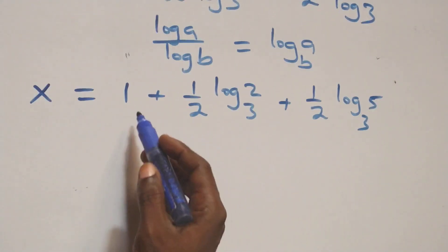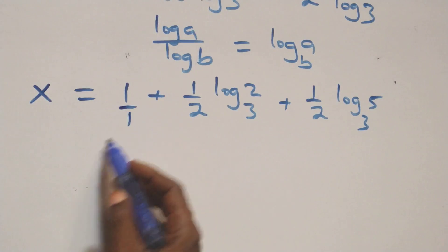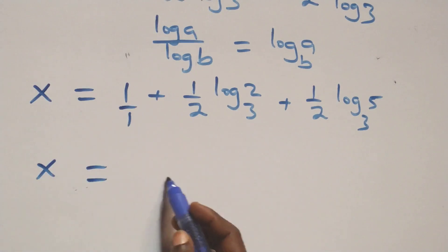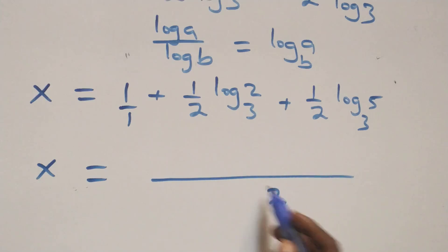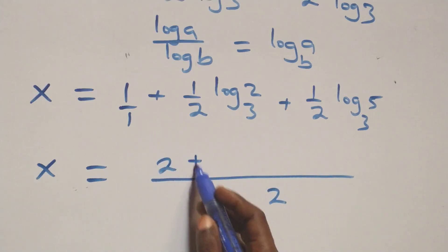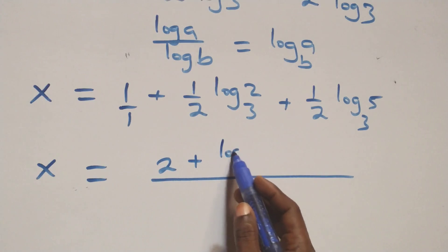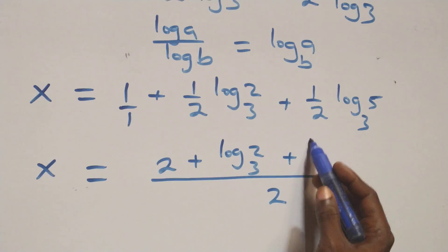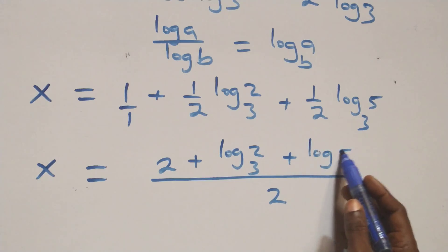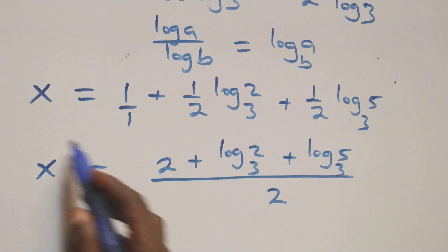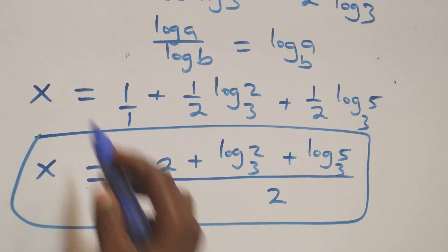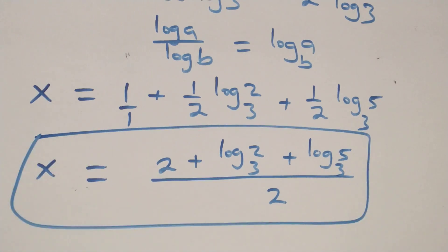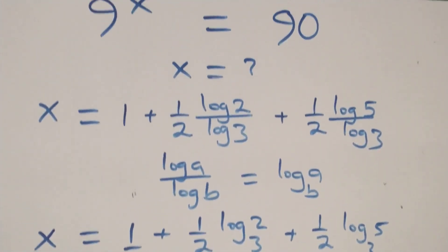We bring these together as a single fraction. x equals 1 plus (log₃(2) plus log₃(5)) over 2, which gives the final answer: x equals (2 plus log₃(2) plus log₃(5)) over 2. Now let's verify this satisfies our original equation.